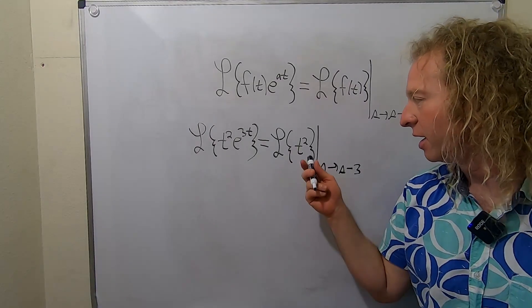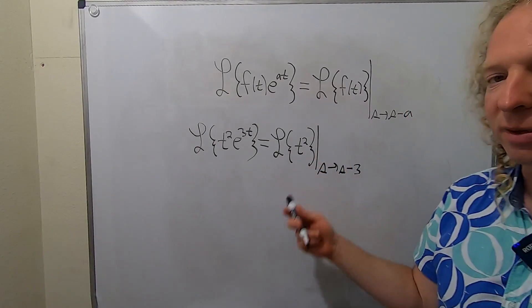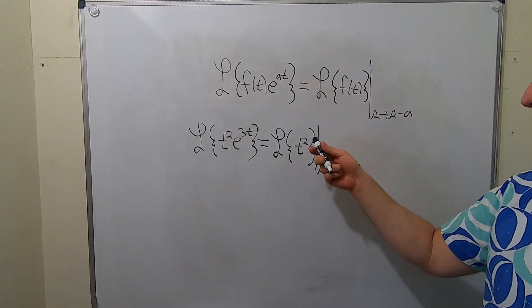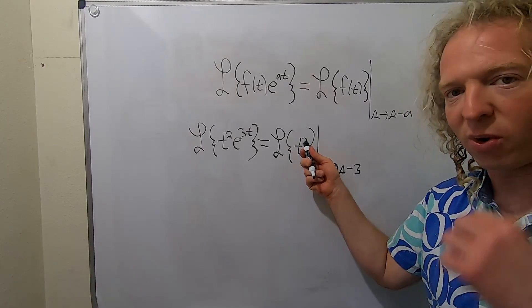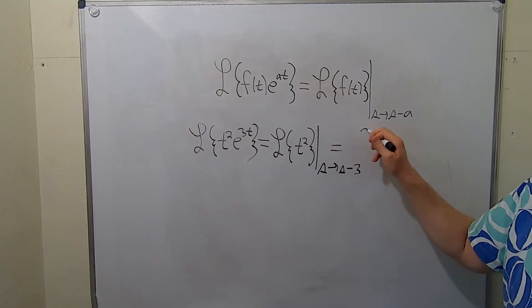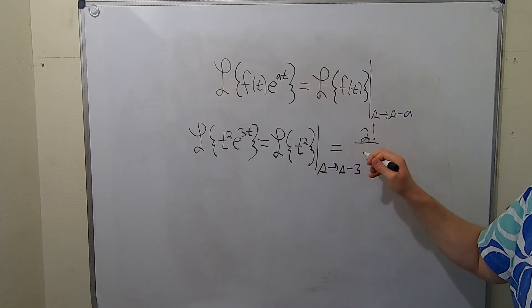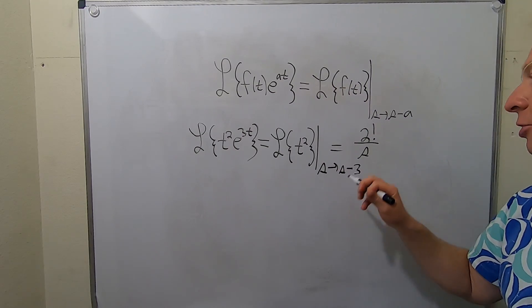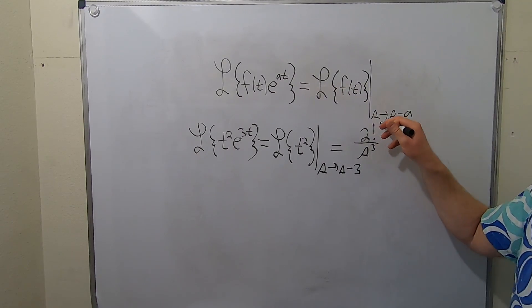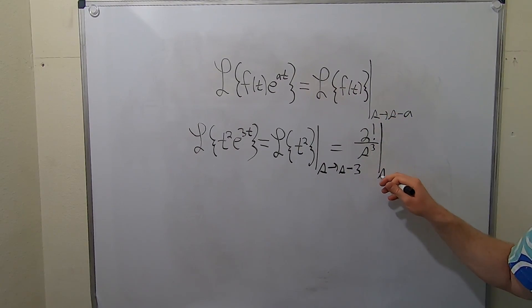Good stuff. Now if you remember when you're taking the Laplace of t squared, it's always whatever is here factorial and it's one higher on the bottom. So it's 2 factorial. And then it's s and it's one higher on the bottom, so s cubed. And we still have the line, so s is going to s minus 3.